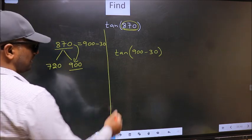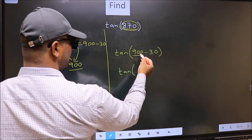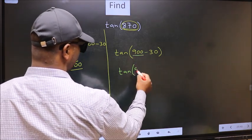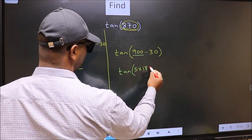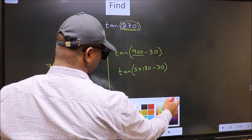Next, tan... In place of 900, we should now write 5×180. Minus 30.